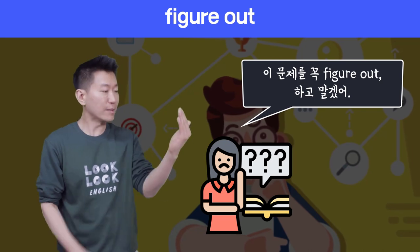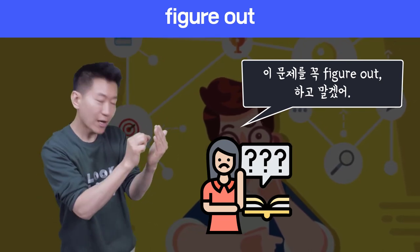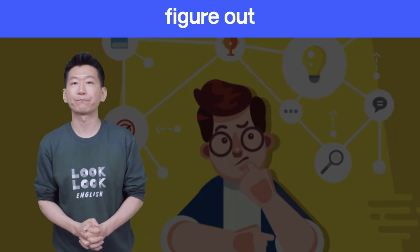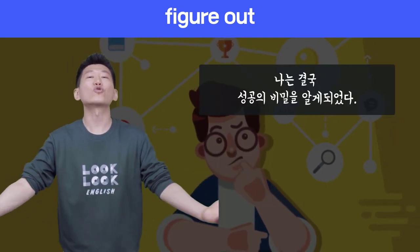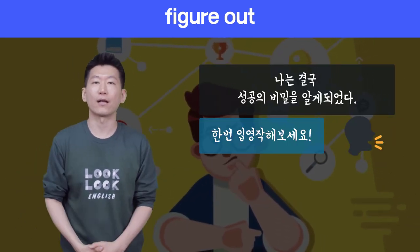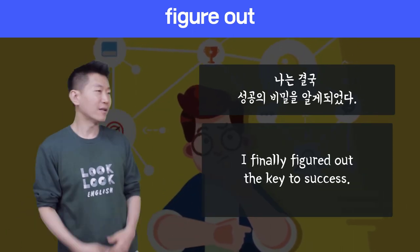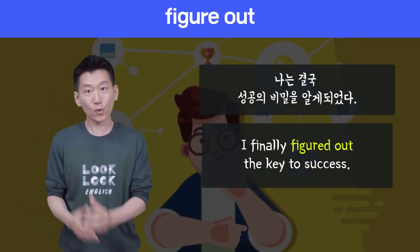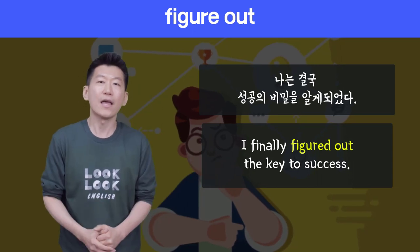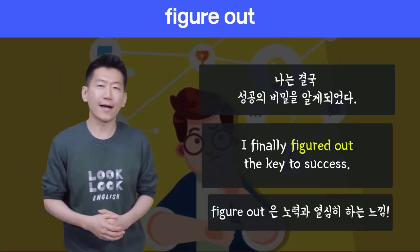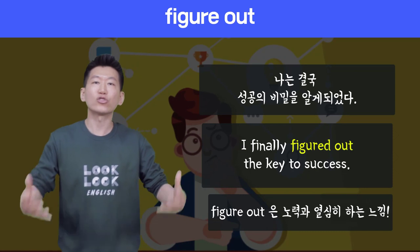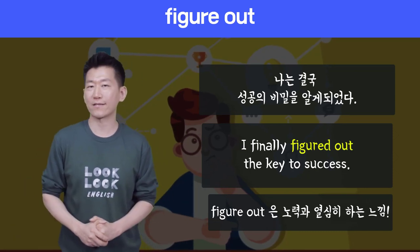하면 이 문제를 막 열심히 머리를 써서 해결하려고 노력하는 모습을 상상해 보시면 되겠습니다. 나는 결국 성공의 비밀을 알게 되었다. I finally figured out the key to success 라고 하면 성공의 키를 알게 되었다 라는 거죠. 그냥 아무런 노력 없이 하는게 아니라 막 열심히 하다보니까 결국은 그것을 우리가 배우게 됐다는 말이 되겠습니다.